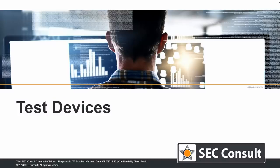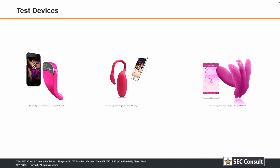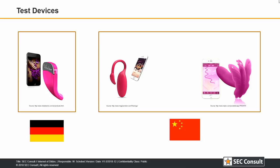Before I talk about the test devices and vulnerabilities, I'm going to make a promise: I will try to keep this as serious as possible — I will keep the IPMs, the innuendos per minute, as low as possible. I selected three test devices: on the right, the Vibratissimo Panty Buster (that's the real name); in the middle, the Magic Motion Flamingo; and on the left, the Real Love Lydia. The two on the left and middle are manufactured in China; the one on the right is manufactured in Germany.